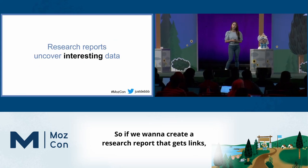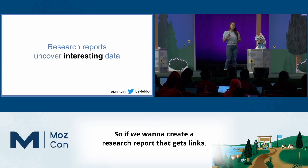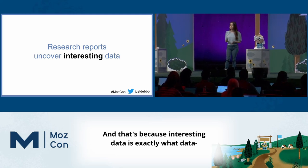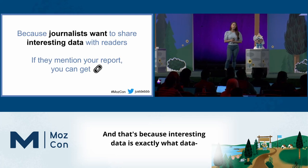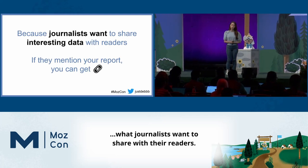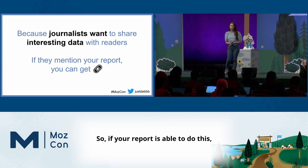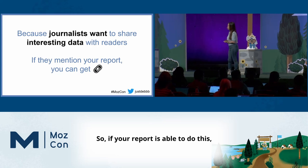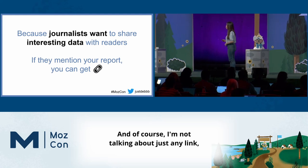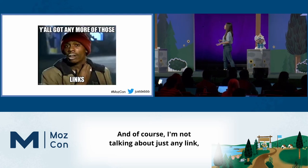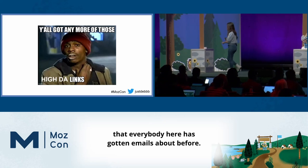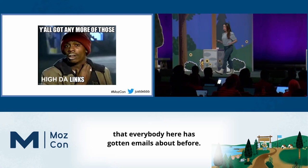So if you want to create a research report that gets links, we need to be able to uncover interesting data. And that's because interesting data is exactly what journalists want to share with their readers. So if your report is able to do this, then you're able to get links to your report. And of course, I'm not talking about just any link — I'm talking about high DA links that everybody here has gotten emails about before.